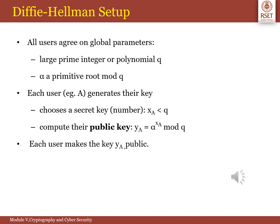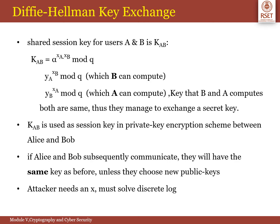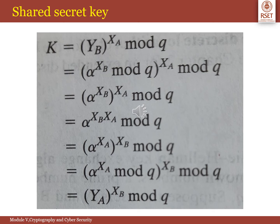Thus, xA is A's private key and yA is A's corresponding public key, and similarly for B. User A computes the secret key as K equal to yB raised to xA mod Q, and user B computes the key K equal to yA raised to xB mod Q. Both the secret keys generated at A and at B will be the same, as shown in this slide.